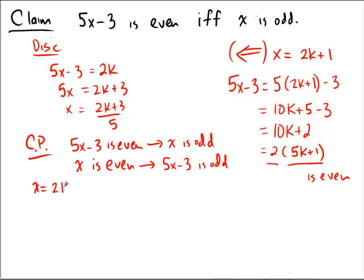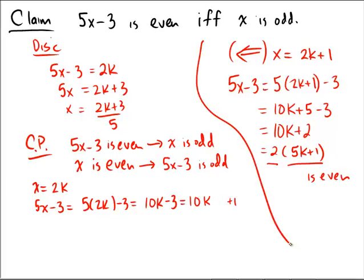How would that go? If x equals 2k, then 5x minus 3 would be equal to 5 times 2k minus 3. That's 10k minus 3. I would be hoping to show that this is odd, so I'm hoping to get a plus 1 on the end here. I'll rewrite 10k minus 3 as 10k minus 4 plus 1, since minus 4 plus 1 is the same as minus 3. Then I can factor out a 2, and we have 2 times an integer plus 1, which establishes that 5x minus 3 is odd. So, we now have a forward direction by contrapositive, and we have a backward direction that can be done directly.